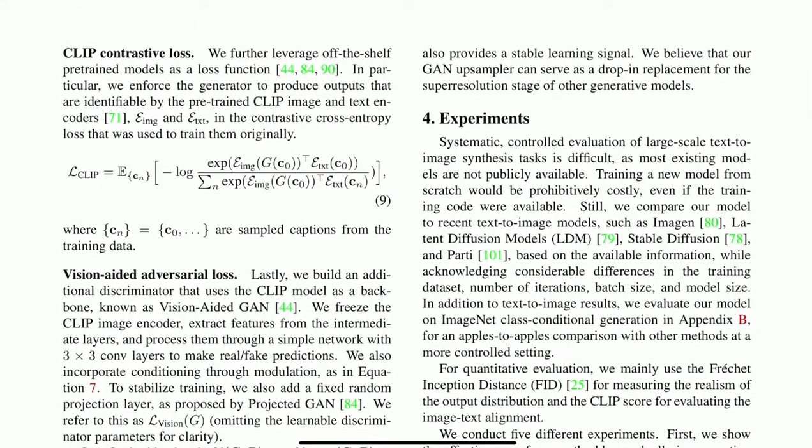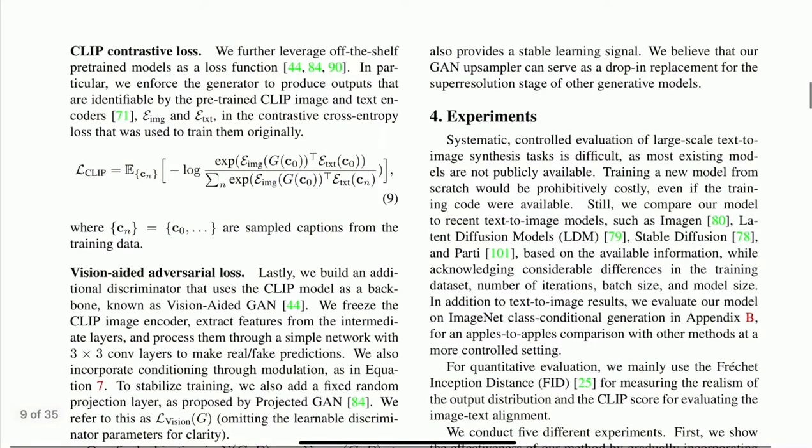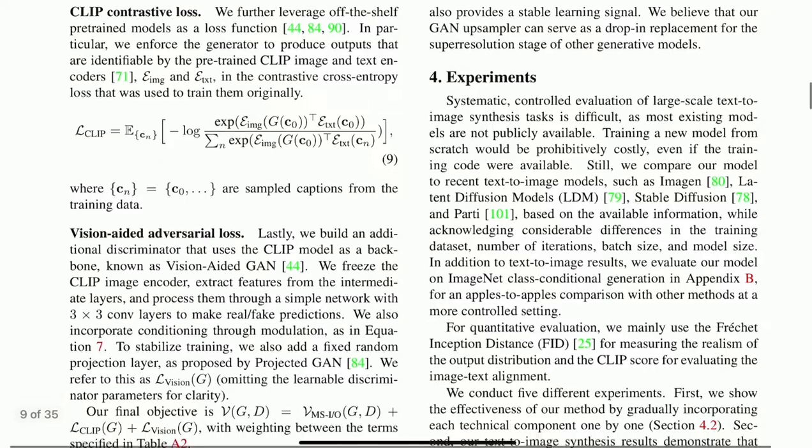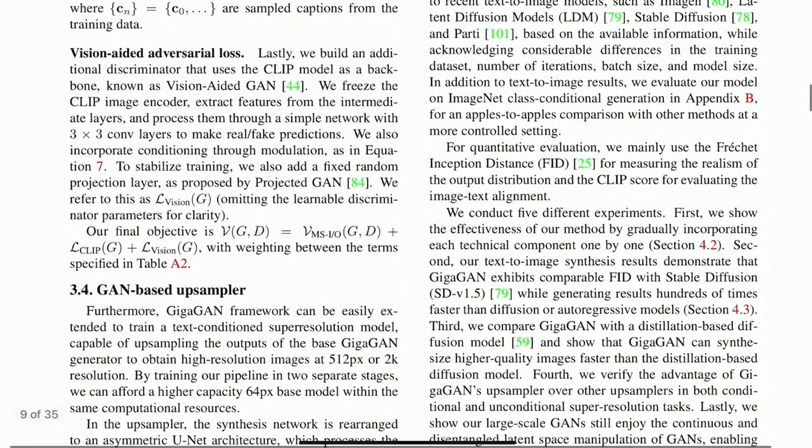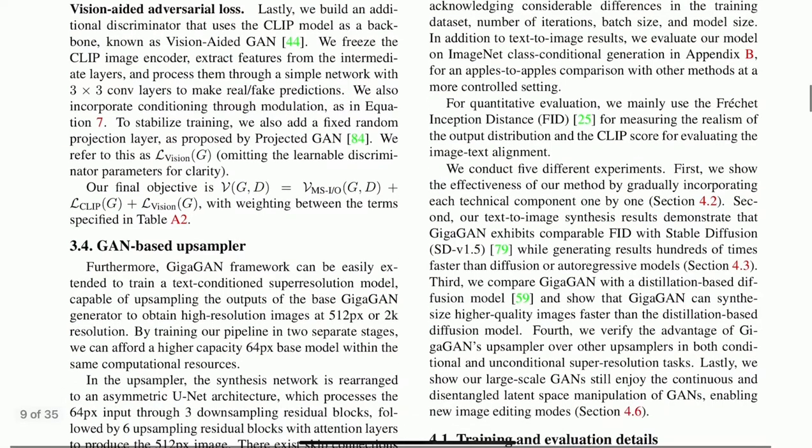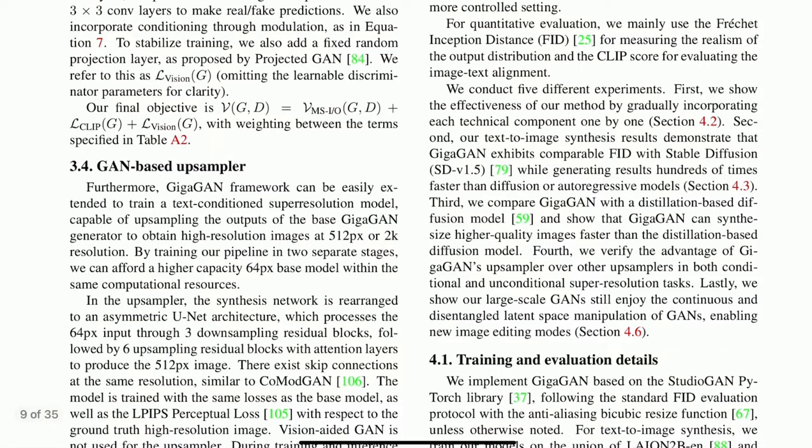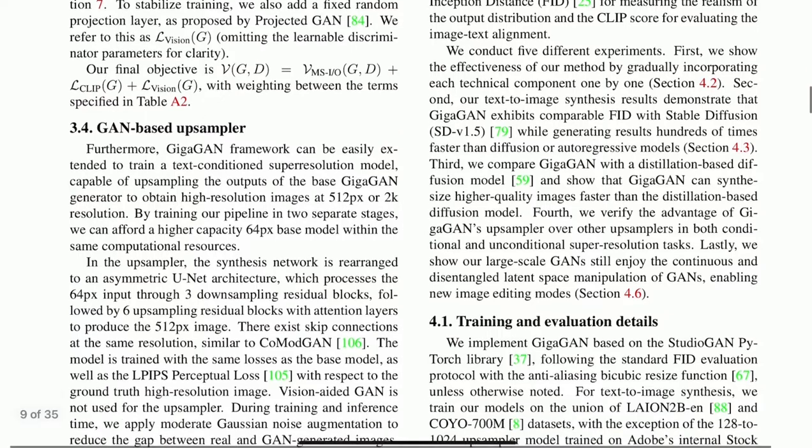The second loss is the contrastive loss. So here they just use the CLIP model and they force the generator to produce outputs that are identifiable by CLIP. So this is pretty standard as well. And they have also a vision-aided adversarial loss where they freeze the CLIP encoder and then they extract features from the layers. So they take the input and pass it through this CLIP and they train a network that predicts real and fake predictions. So that's basically how it works. And that's how they get it. They have those three losses that are together with some weights and that's how they train the network.